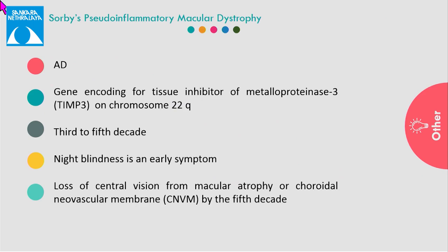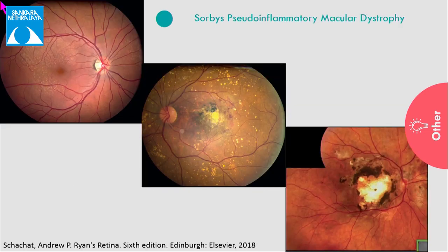Sorsby's pseudo-inflammatory macular dystrophy is an autosomal dominant maculopathy caused by mutation in the gene involved in the tissue inhibitor of metalloproteinase. They generally present in the third to fifth decade of life. Night blindness can be an early symptom, and they have loss of vision because of atrophy or CNVM development. They have confluent yellow drusen-like deposits throughout the posterior pole, and in later stages a coarse CNVM develops.